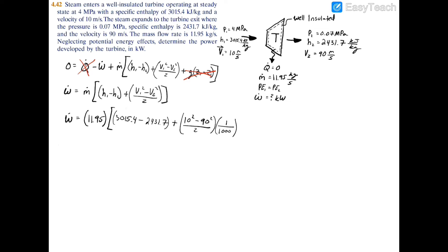And the reason for that is that this unit here for your specific enthalpy is in kilojoules per kilogram. So you already have a kilo unit there. However, this unit here is meters squared per second squared, so you're actually missing the kilo unit.